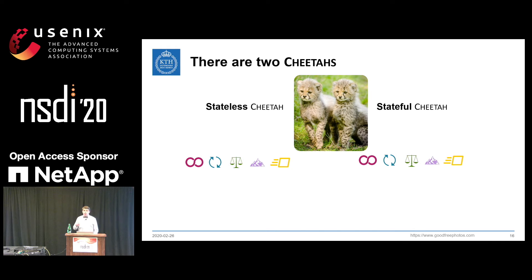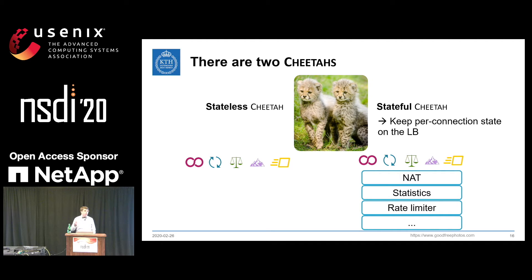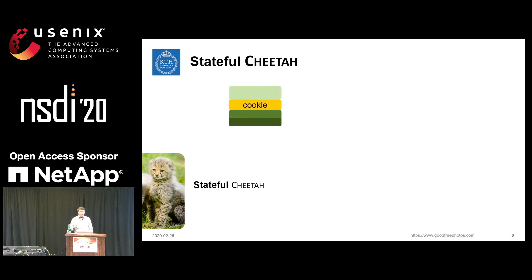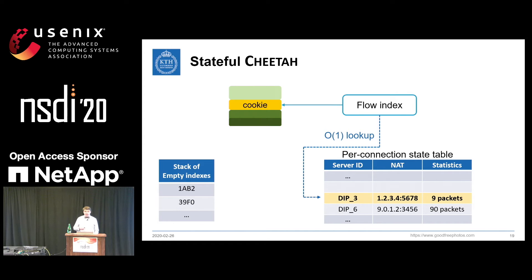The stateful Cheetah allows keeping some per-connection state directly on the load balancer. When would you want this? For instance, if you want to build a NAT load balancer you need to remember the original source IP and port. Or if you want to track statistics like the number of packets per connection, implement a rate limiter, or any other stateful network function. The stateful Cheetah encodes into the cookie not the server ID but a flow index, which is a direct index into a state table containing the server ID plus any additional state — NAT mappings, statistics, etc. This allows constant-time lookup.